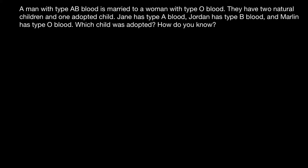First of all, let me remind you of the four blood groups. The first blood group would be blood type A, then blood group B, blood group AB, and the last blood group O. Blood group A is made by two genotypes: it can be AA or AO.